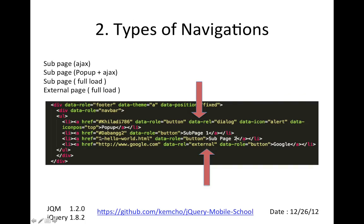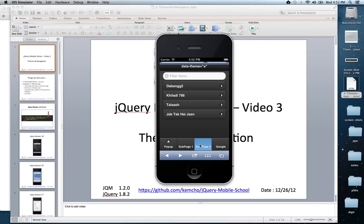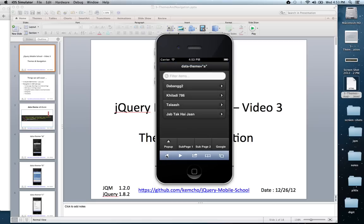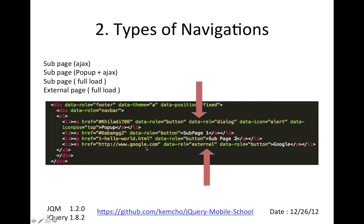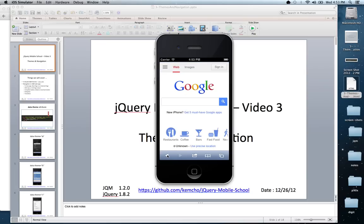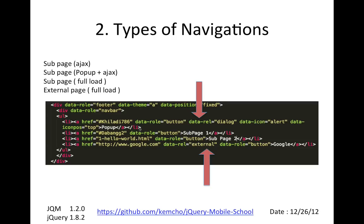The third navigation type is an external page — its code does not reside within your page. It can have a separate title, no footer, and you can still navigate to it as a jQuery Mobile page. The fourth example is an external page that is not a jQuery Mobile page. For external pages, you would want to not use Ajax — you specify data-rel external, and it always does a full load. For example, linking to Google.com in your navbar uses this approach.